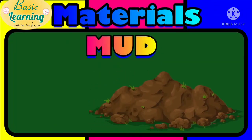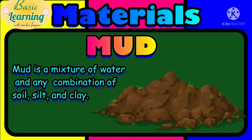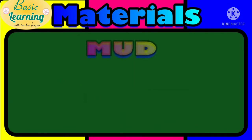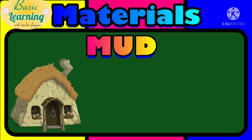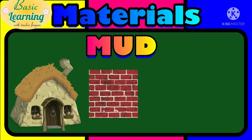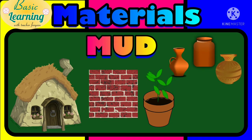The eighth type of material is mud. Mud is a mixture of water and any combination of soil, silt, and clay, and we also call this material ceramics. Mud is used to make a mold of a hut, and it is baked to make bricks for the walls of houses and buildings. In the garden, plant pots are made with mud. Even kitchen pots, jars, and canisters can be made with mud. Mud can also be used to make idols and statues.